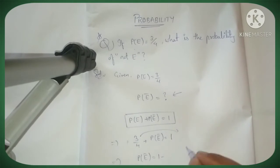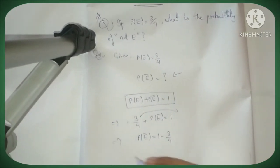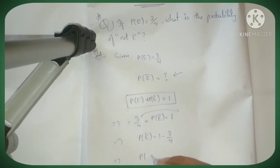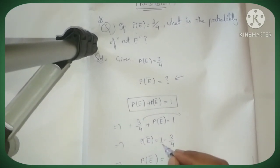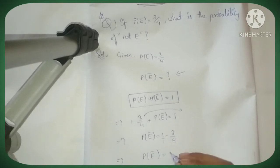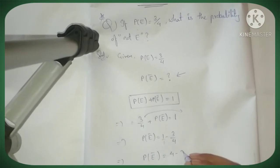P(not E) equals, using cross multiplication - the denominator here is 1. Cross multiplication: 1 into 4 equals 4, minus 3 into 1 equals 3, divided by 1 into 4. So 4 minus 3 equals 1.